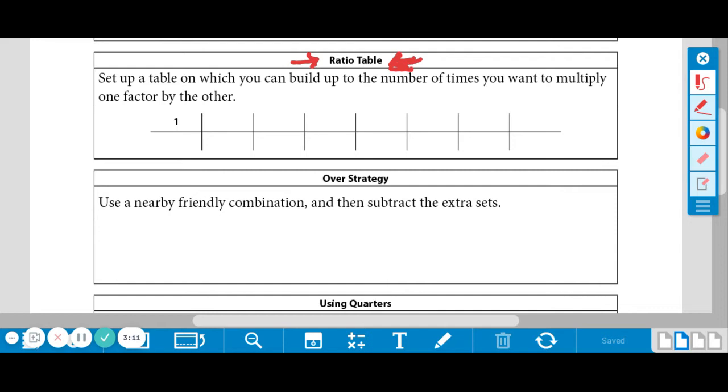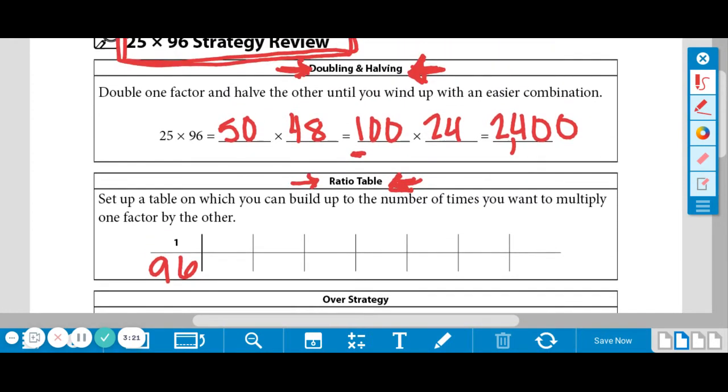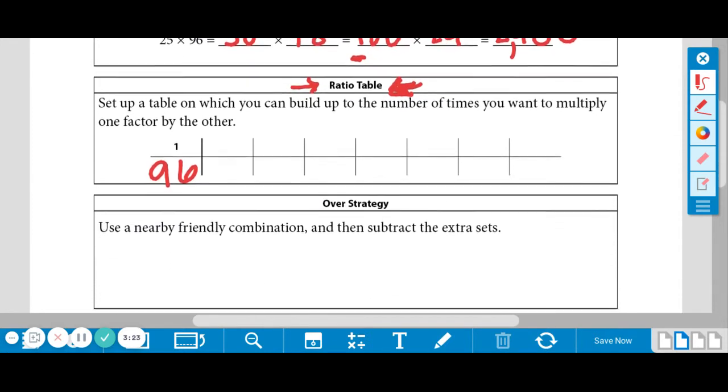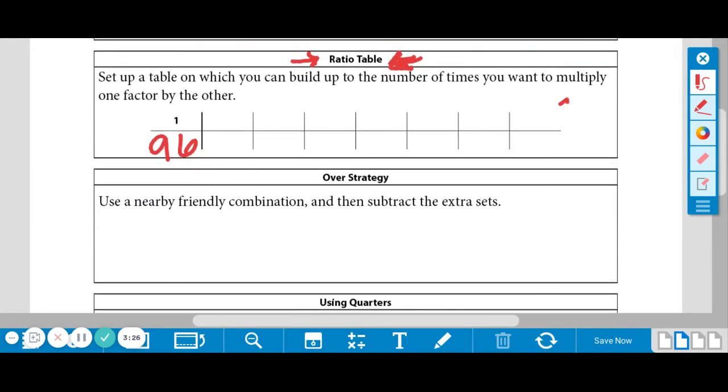So I'm going to start off with one. Oops, I made a mark. 10 times 96. Okay, because that was one of our factors. And we're going to build it up until we get a 25 at the top, because that is the other factor. So right away when I start with a 1, I'm probably always going to go on to 10 next, just because it's a very simple problem. So 1 times 10 was 10. 10 times 96 is 960.